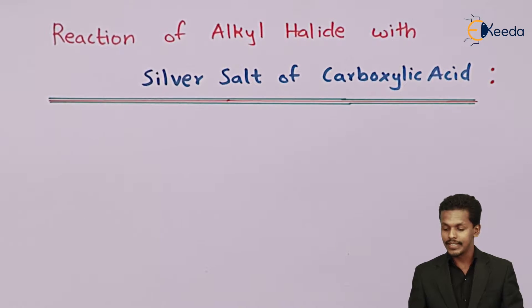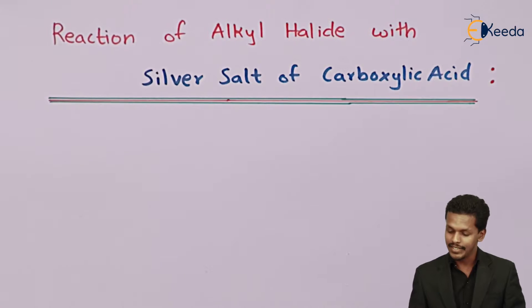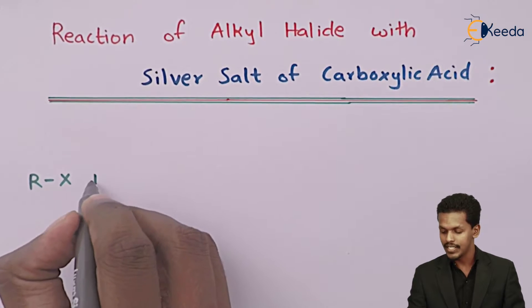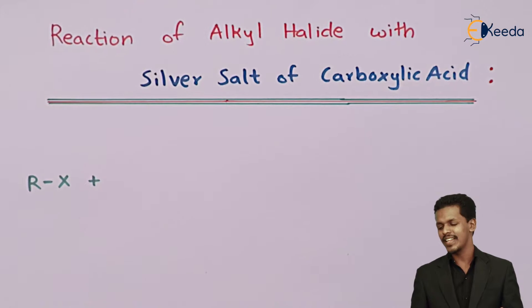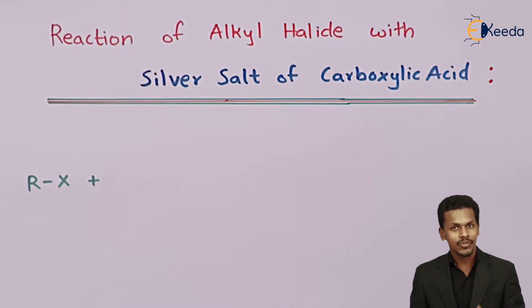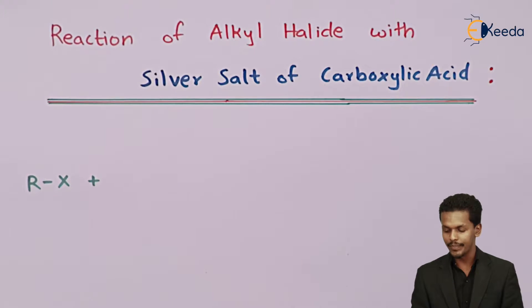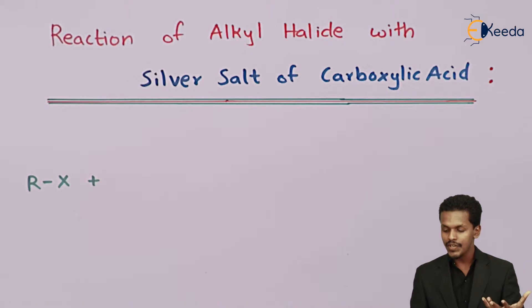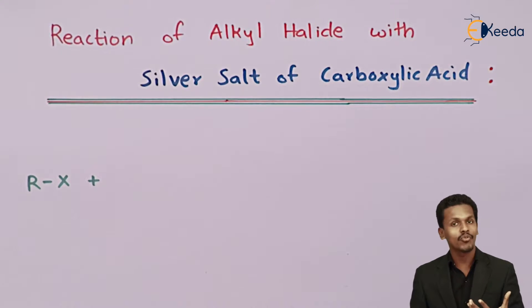Talking about the reaction of alkyl halide with the silver salt of carboxylic acid — whenever we react alkyl halide (RX) with the silver salt of carboxylic acid, which can also be a fatty acid, the silver salt of that fatty acid is dissolved in an ethanol solution so as to obtain an ester.